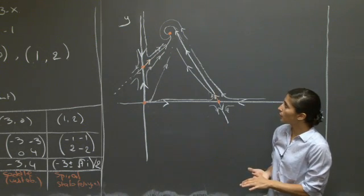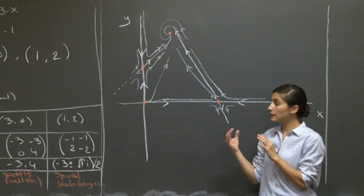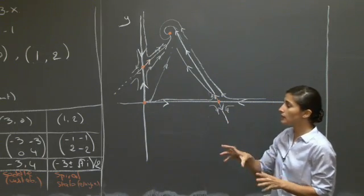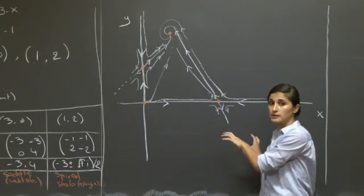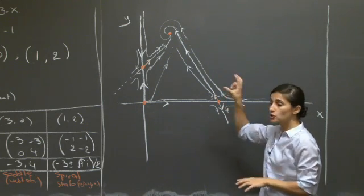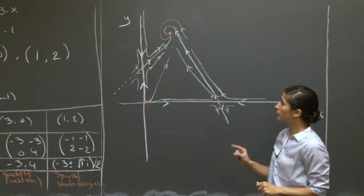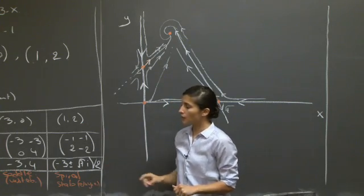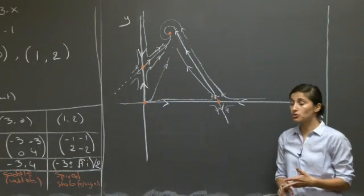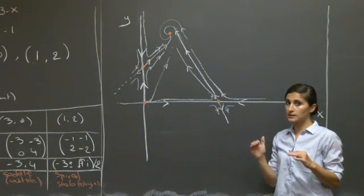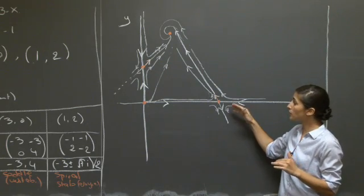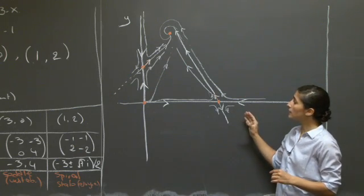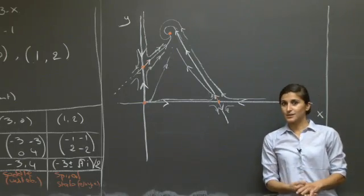The key idea was to apply linear phase portrait methods to the nonlinear system after linearizing around each critical point. Importantly, in all cases examined, the critical points were structurally stable — meaning in the trace-determinant diagram, none were borderline cases where a small perturbation would radically change the local structure. Therefore the linearization is valid around all four critical points. That ends this recitation.